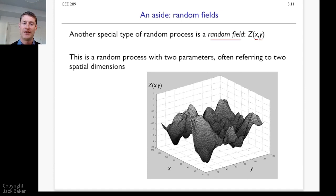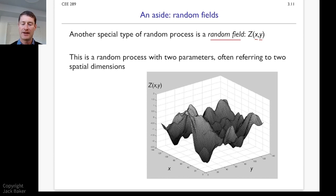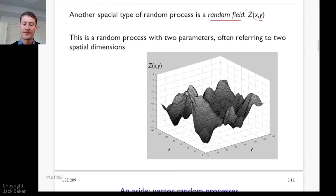So we could have an xyz process. We'll point out a couple of things where we can do these spatial random field problems. A lot of the ideas from random processes carry over to random fields — but that's kind of one extension.